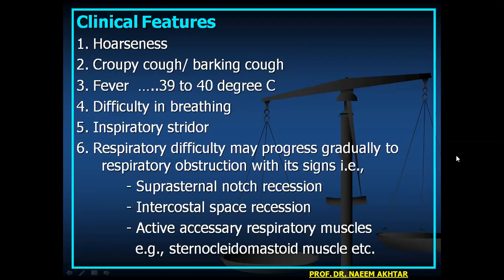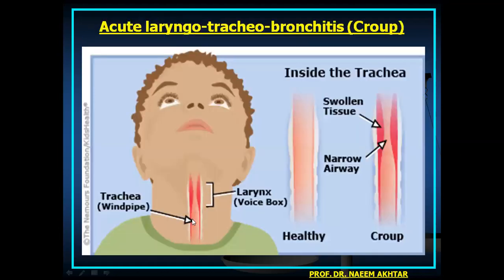Signs of obstruction include suprasternal and intercostal recession and use of accessory respiratory muscles including sternocleidomastoid. This is the trachea and larynx — in the subglottic region of this windpipe, there is edema of tissues leading to a narrow airway. This healthy trachea is compared to the croup patient with a narrow airway in the subglottic region.